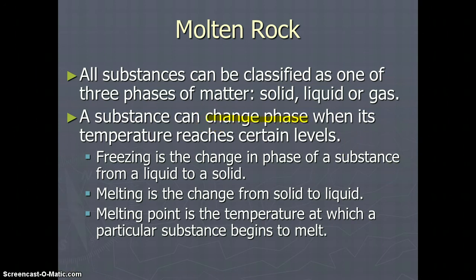We can make a substance change phase when we change its temperature. So changing phase is related to changes in temperature. For example, freezing is the change in phase of a substance from a liquid to a solid. Melting is exactly the opposite — it is when we change from a solid back to a liquid. Melting point is the temperature at which a particular substance begins to melt.